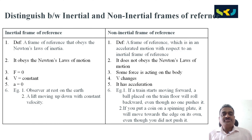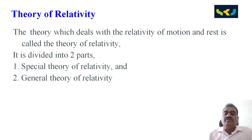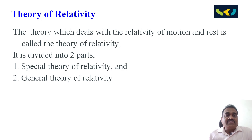We completed distinguishing between inertial and non-inertial frames. Our next topic is the theory of relativity. The theory which deals with the relativity of motion and rest is called the theory of relativity. It is classified into two types: number one, special theory of relativity, and number two, general theory of relativity.